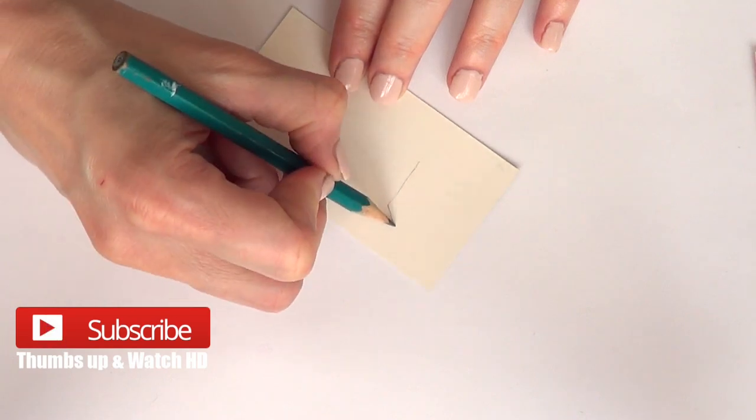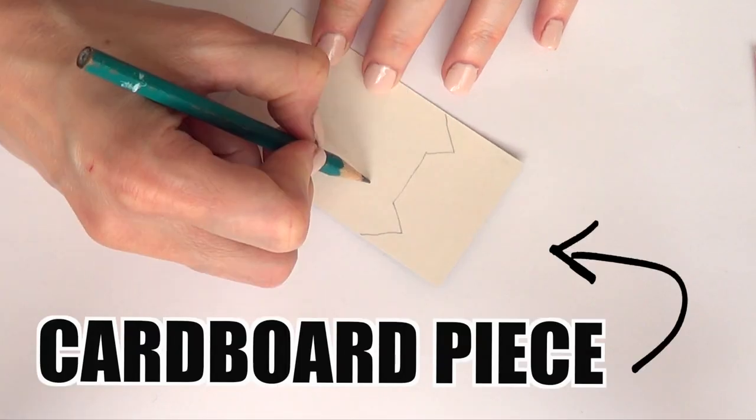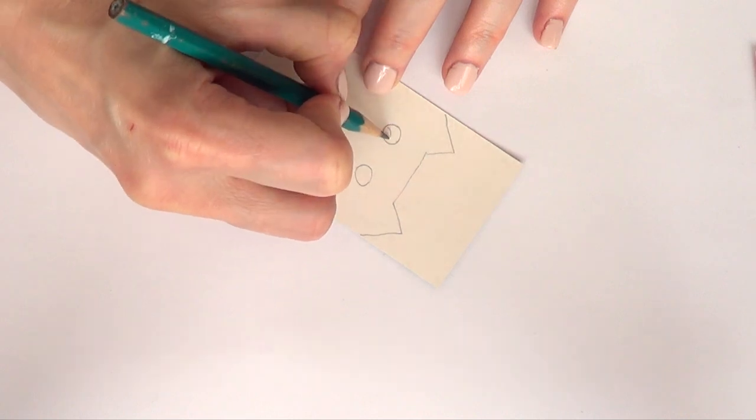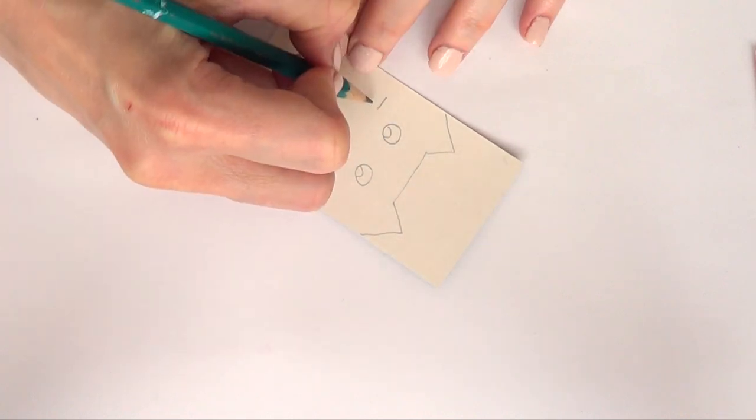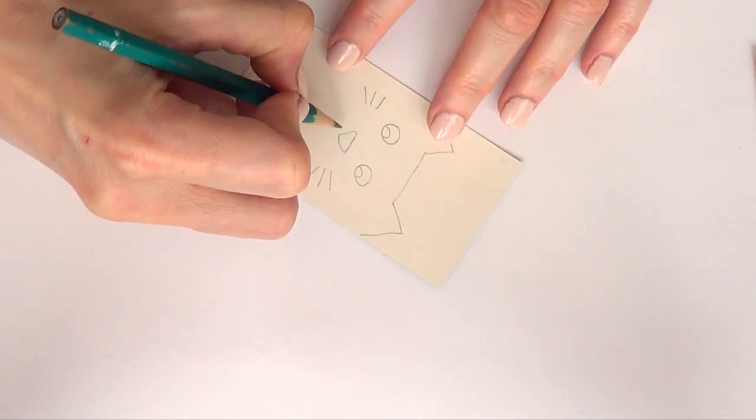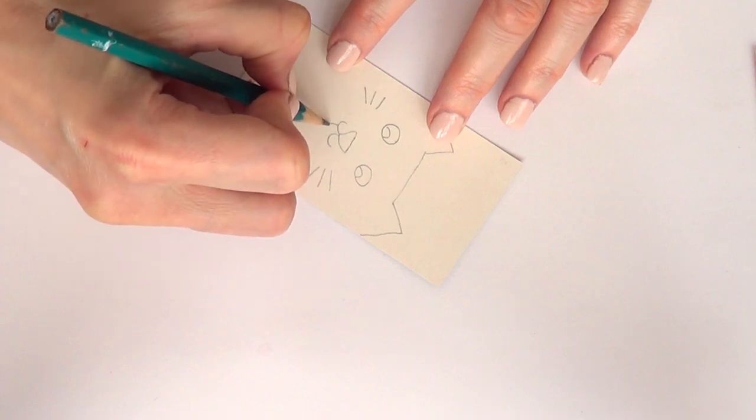Hey guys, it's Renee. Welcome to this hack DIY. We're gonna be starting with some cardboard pieces. I'm using old business cards, and I'm going to first sketch with my pencil a kitty face.